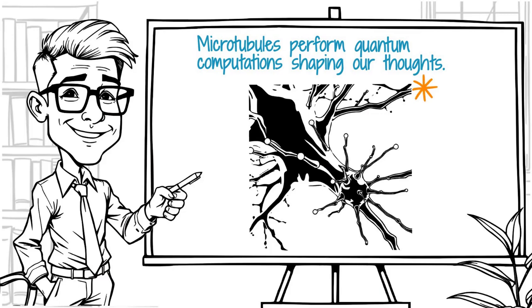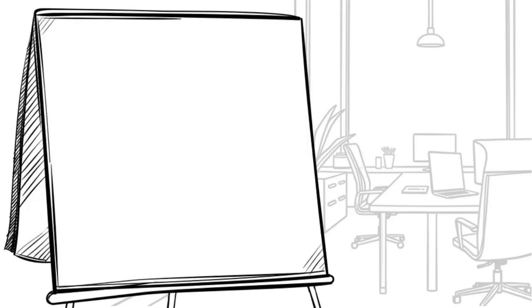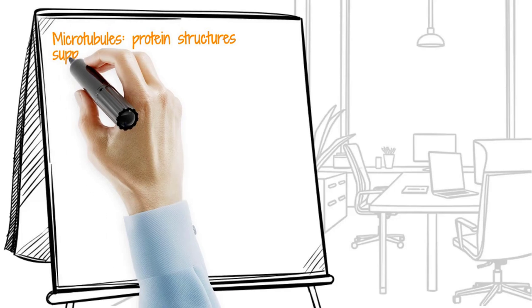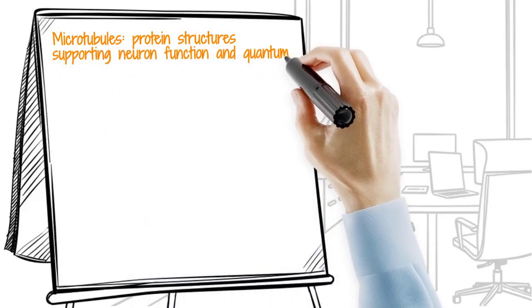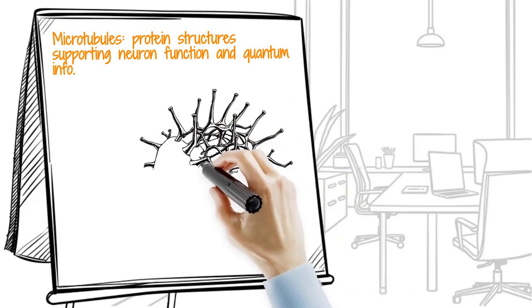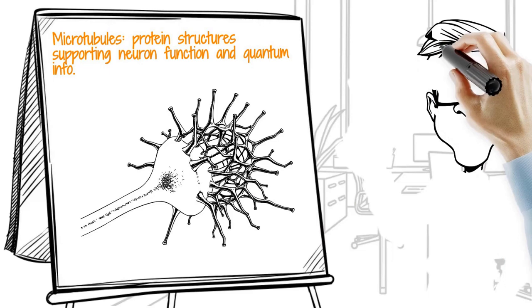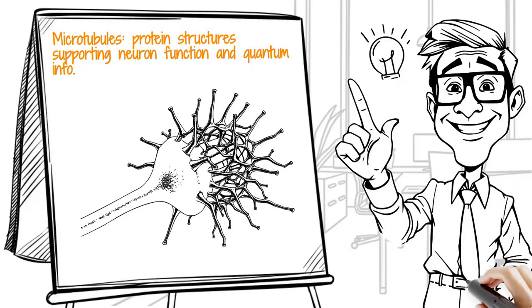Microtubules are cylindrical protein polymers that form part of the cell's cytoskeleton, providing structure and aiding in transport within neurons. They are composed of tubulin dimers arranged in helical lattices, which some argue may support quantum coherence. Unlike synaptic transmission, which is noisy and classical, microtubules operate inside neurons with regular geometric precision, offering a potential substrate for quantum information.